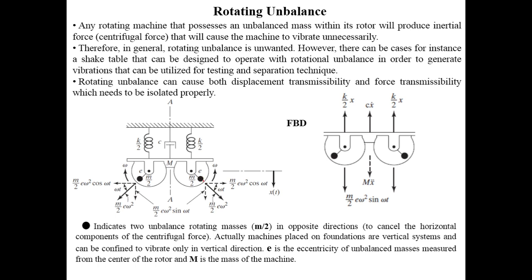Each unbalanced mass has a magnitude of m/2 located at a distance e, known as the eccentricity. When the rotor rotates, these masses create centrifugal forces acting radially outward. The centrifugal force is given by (m/2)eω², which has units of newtons. So (m/2)eω² is the centrifugal force generated by the unbalanced mass acting at eccentricity e from the axis of rotation, decomposed into horizontal and vertical components.